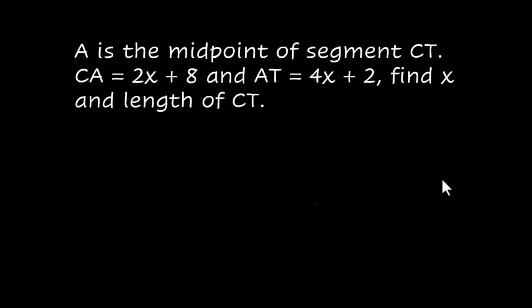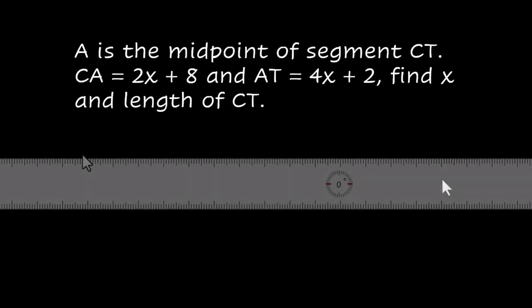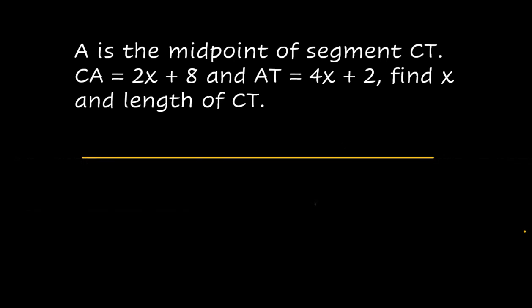Okay. Let's do this one. A is the midpoint of segment CT. CA equals 2X plus 8 and AT equals 4X plus 2. Find X and then find the length of CT. So we have A is the midpoint of segment CT. So CT is the entire segment and A is the midpoint.